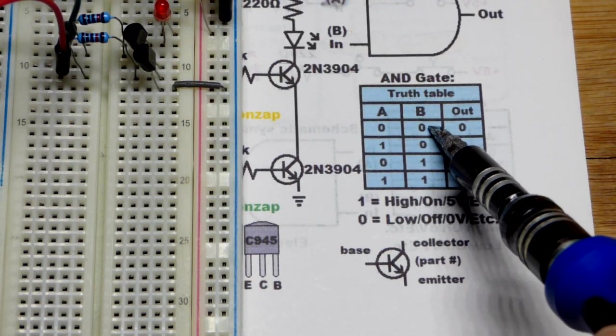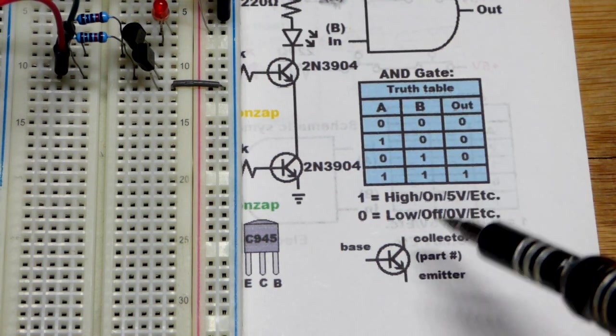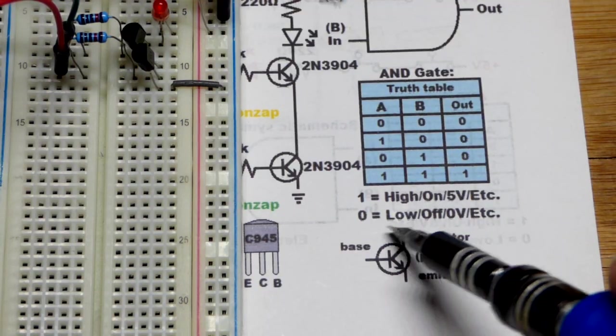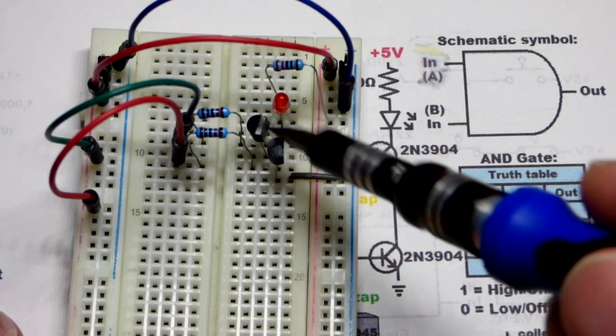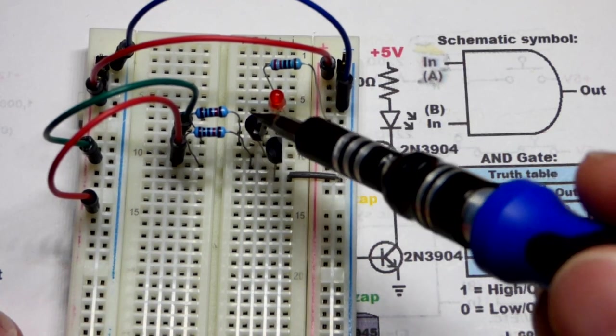And we got zero. That could mean, you know, off, could mean zero volts. There's all kinds of things that it can mean. So in this particular circuit, the transistors are either on or off. Same with the LED.